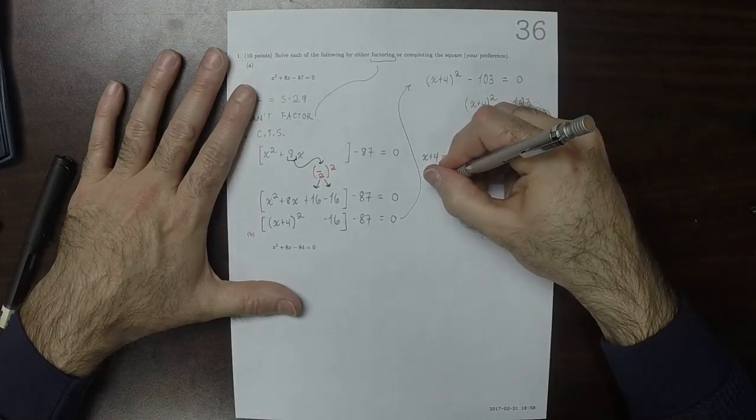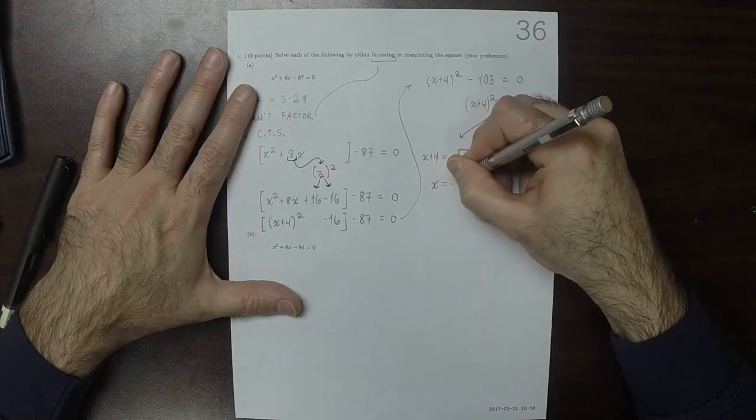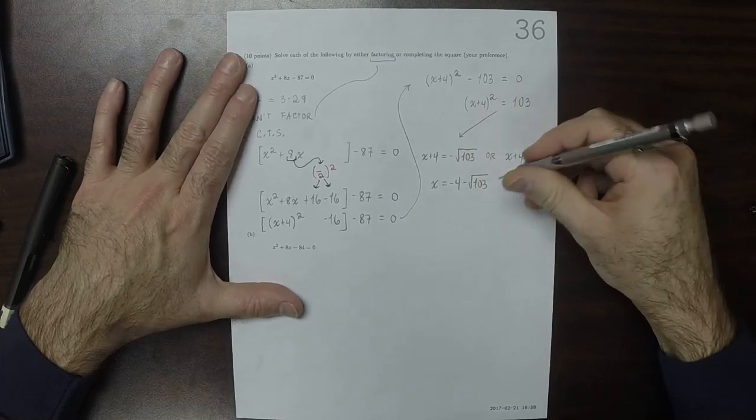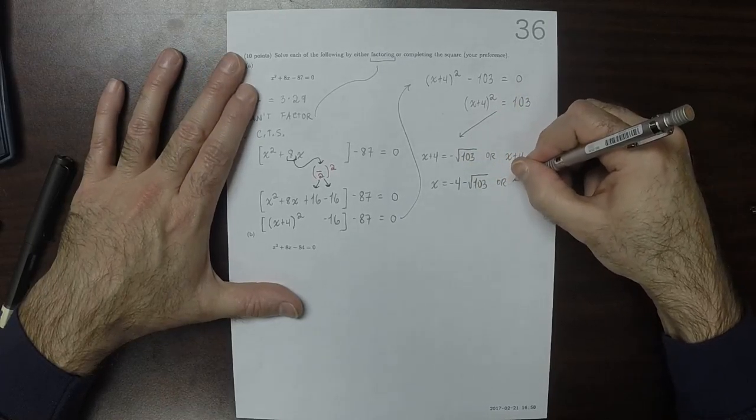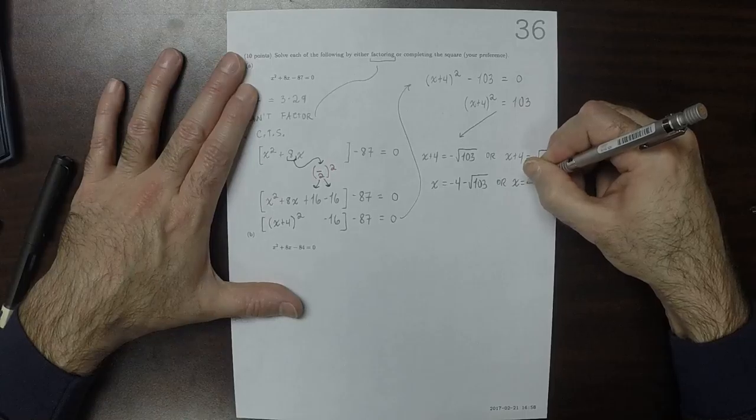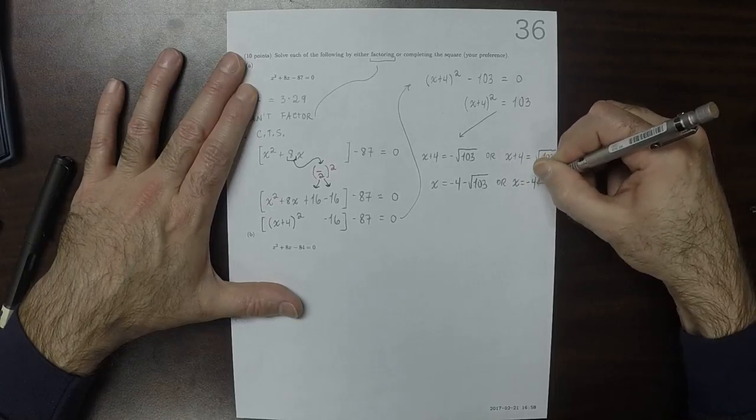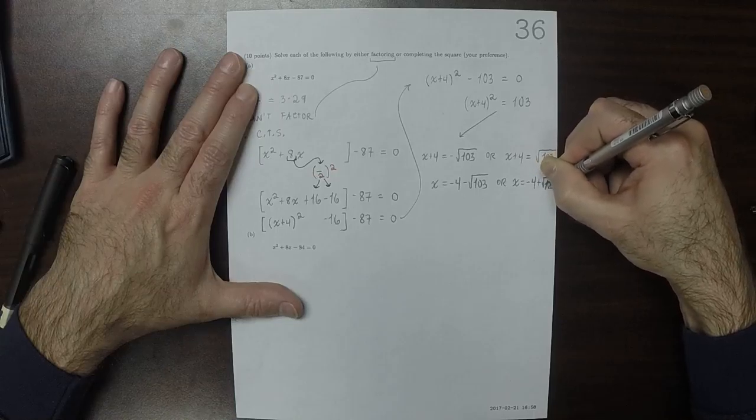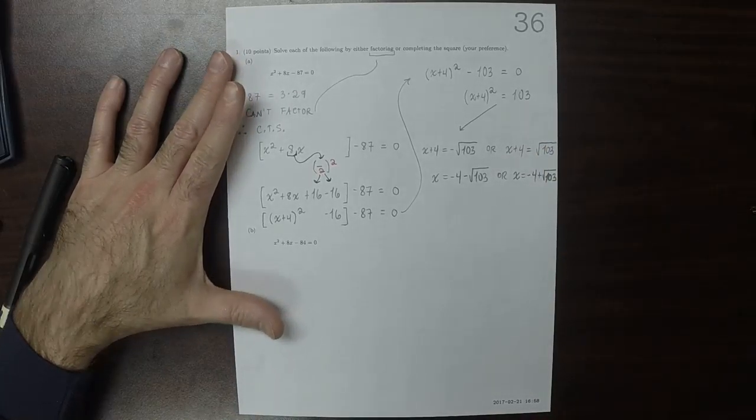Okay? So then, those answers are, x is negative 4, minus square root 103. Or, x is negative 4, plus square root 103. Okay?